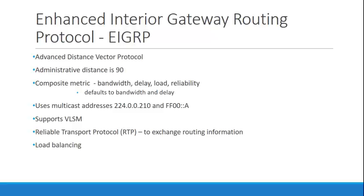EIGRP uses a composite metric to make its best route decisions. The metric is made up of bandwidth, delay, load, and reliability. However, when you leave everything at its default, it becomes simply bandwidth and delay. So the default metric is bandwidth and delay.